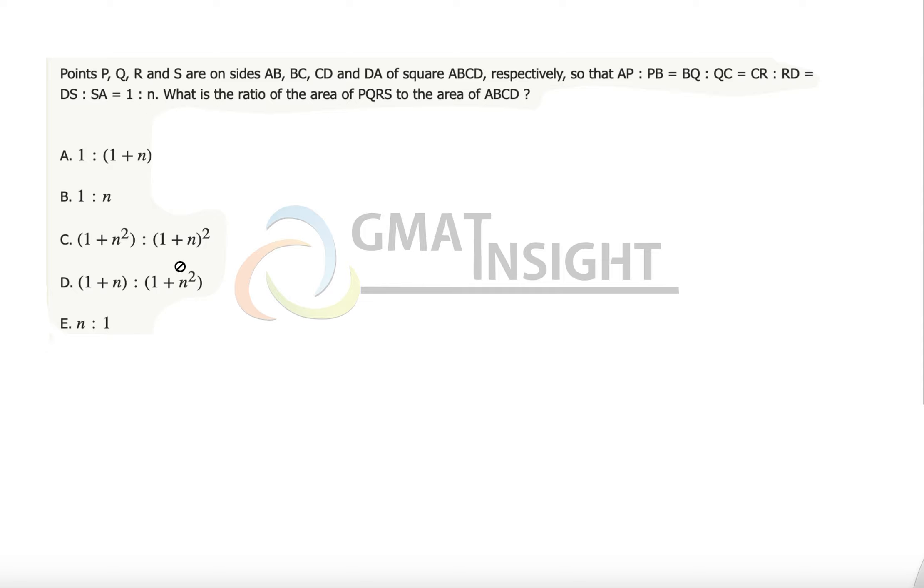Such a question can comfortably be answered if you make several assumptions. What I'm doing is drawing a square, and let me assume that the side of this square is 4 units while the value of n is 3.